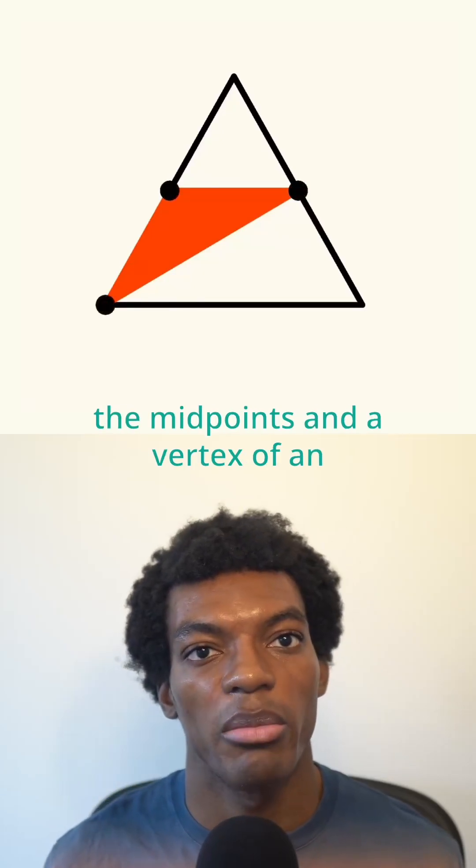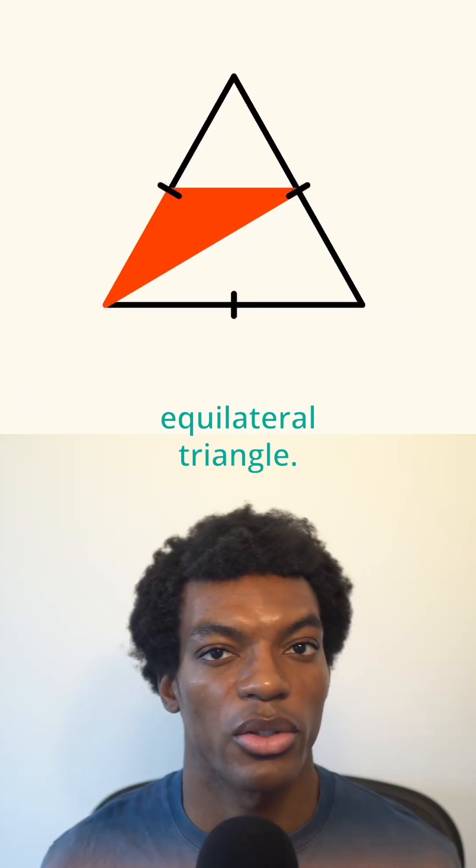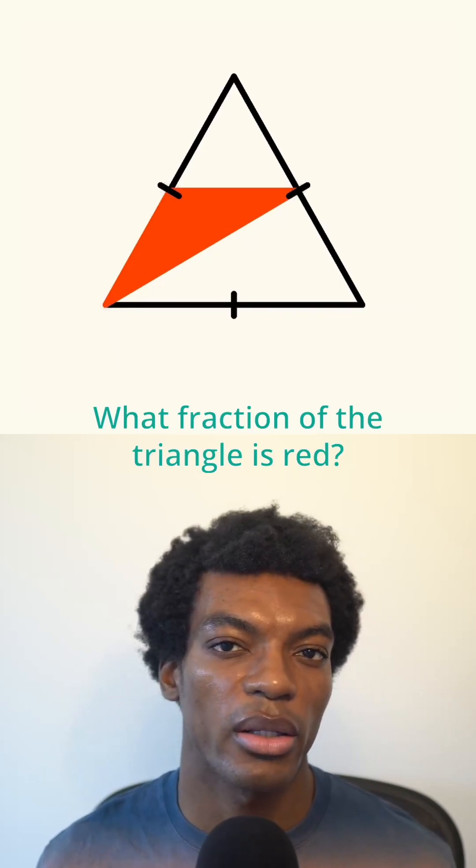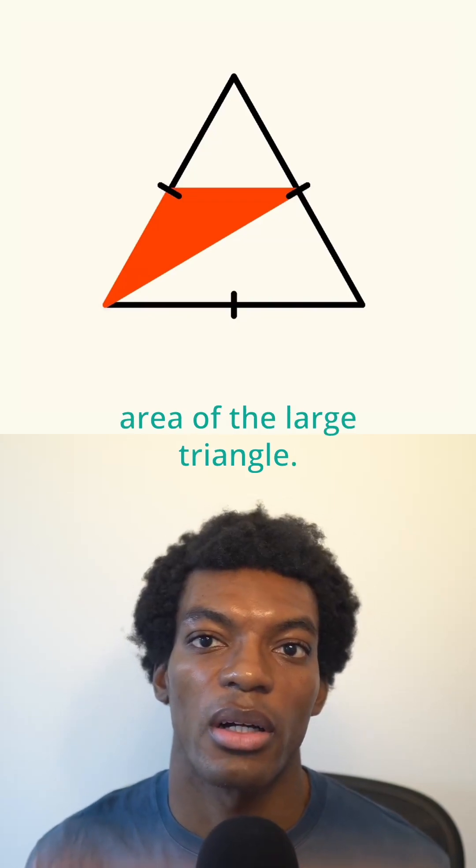The red triangle is constructed using the midpoints and a vertex of an equilateral triangle. What fraction of the triangle is red? We'll start by finding the area of the large triangle.